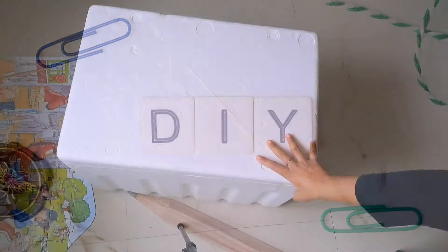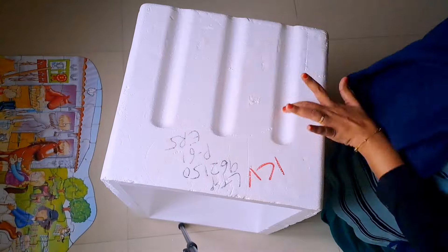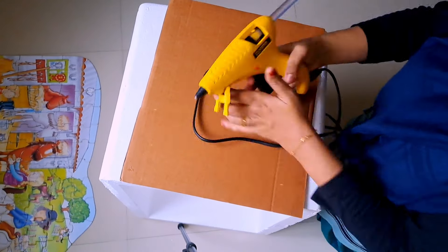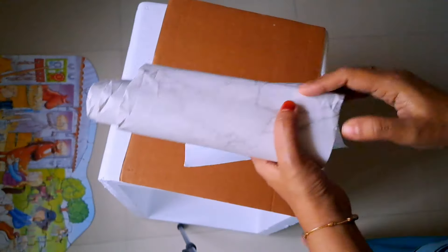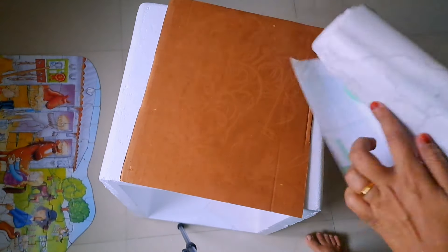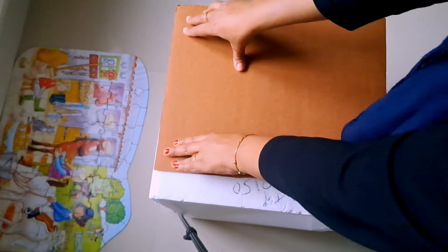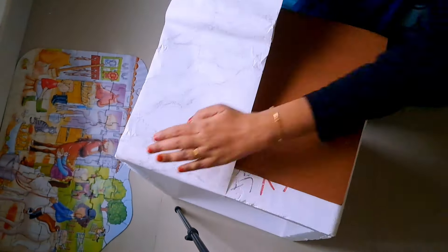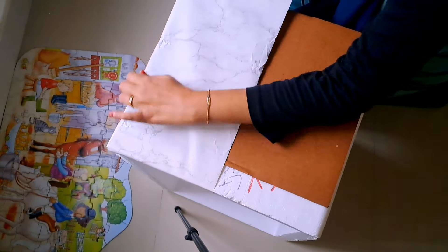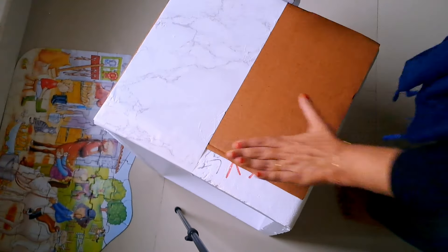This is a bedside table. This is a thermocol box and this is a cardboard box. This is also a wallpaper box — I am using the wallpaper. We have a thermocol box and a paper box as well.